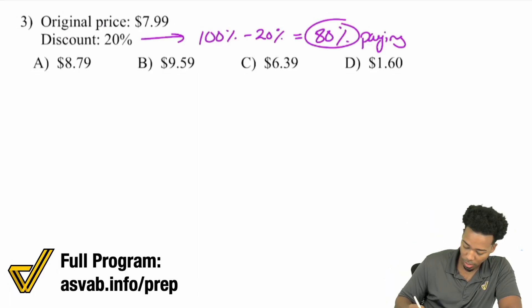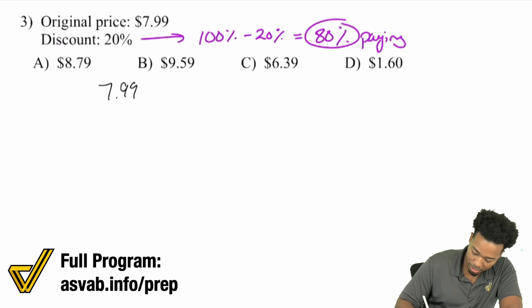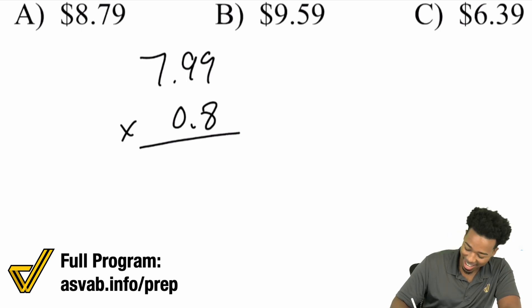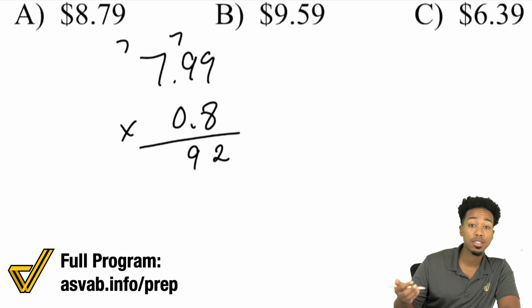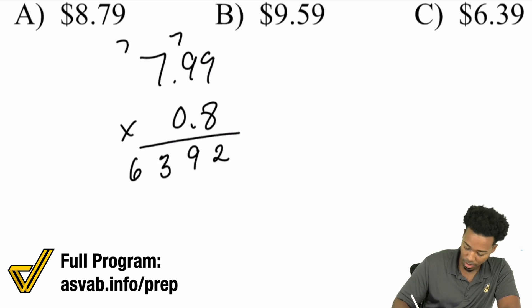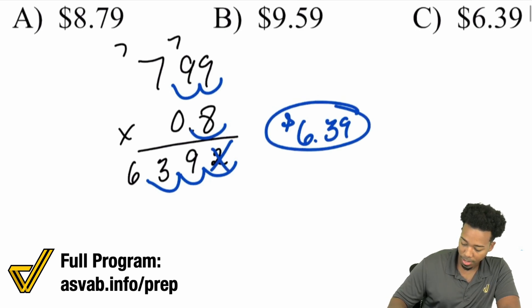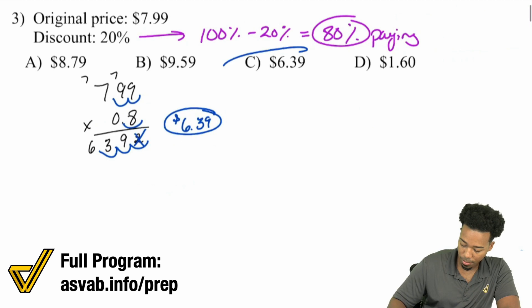All I have to do is $7.99 times 80%. Nine times eight is 72. Nine times eight is 72, carry the seven, 79. Seven times eight is 56, carry the seven is 63. We have three decimal places, so we've got $6.39. The answer is C.